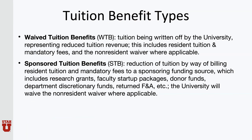The tuition benefit program includes two different types of tuition benefit. First, we have waived tuition benefits. This is tuition being written off by the university, which represents a reduced tuition revenue — a loss of tuition revenue. This includes resident tuition and mandatory fees and the non-resident waiver where applicable.